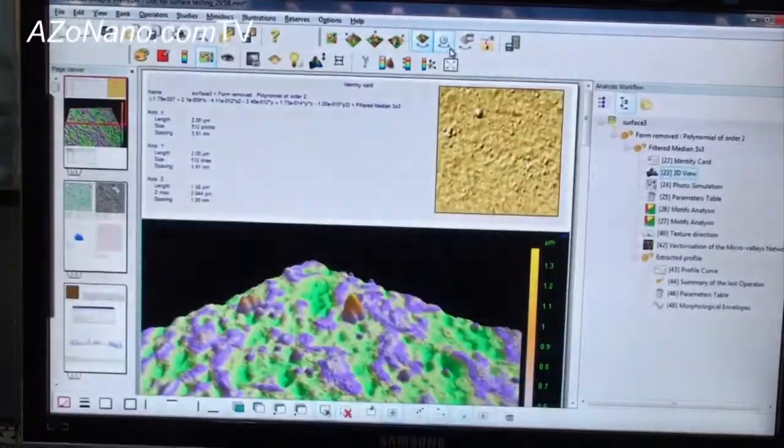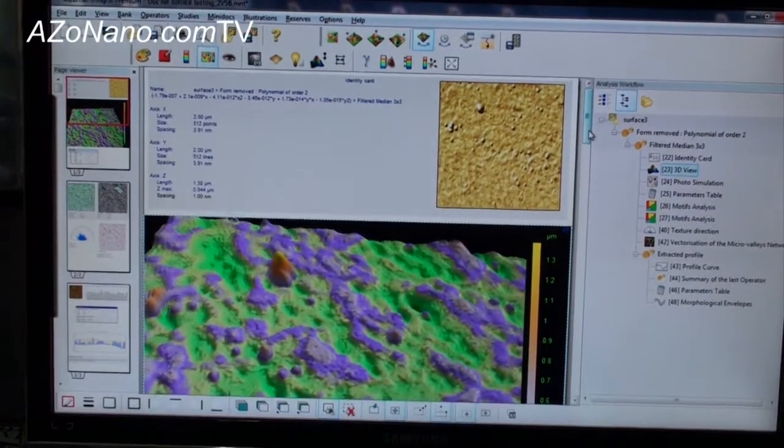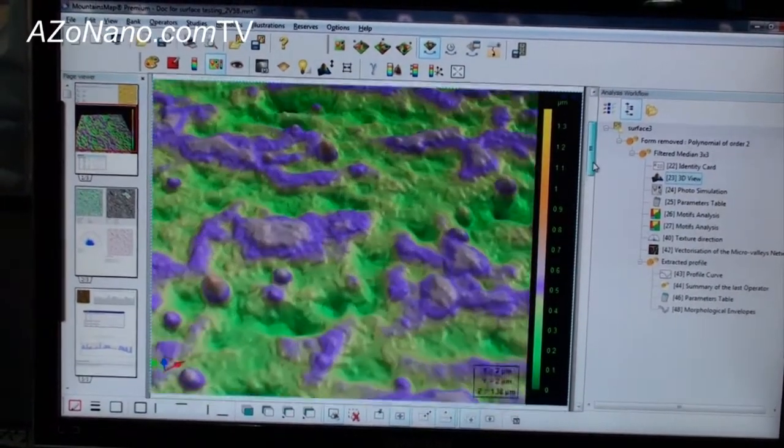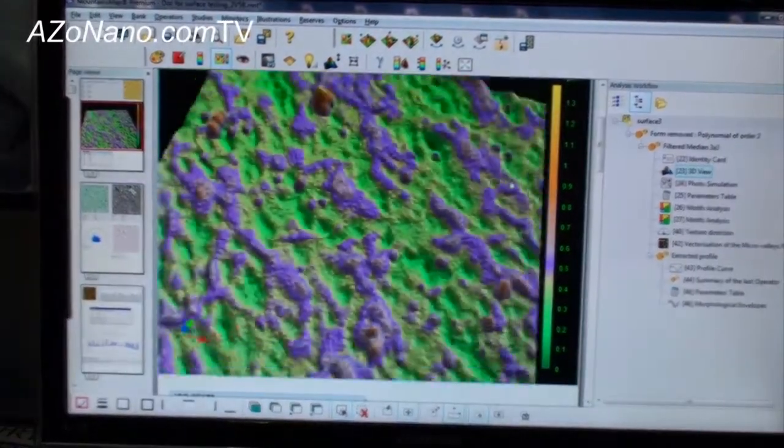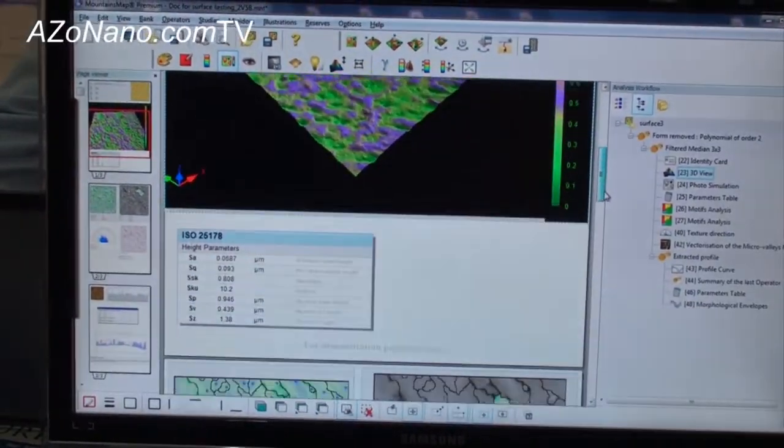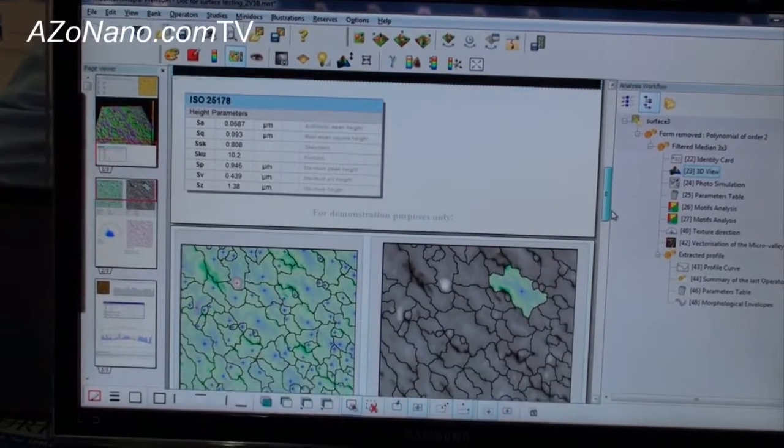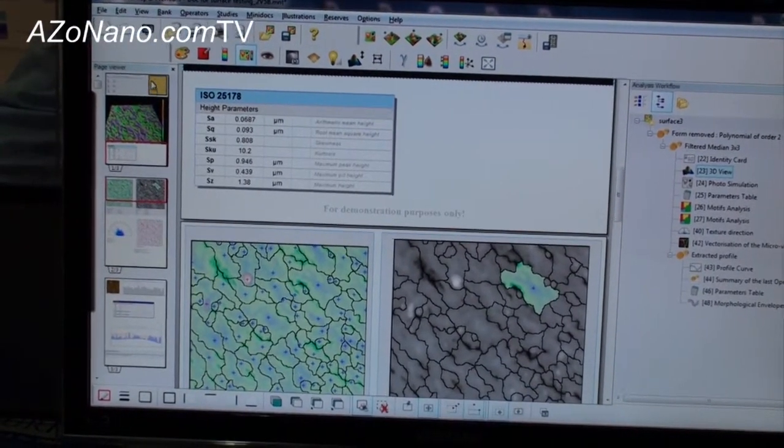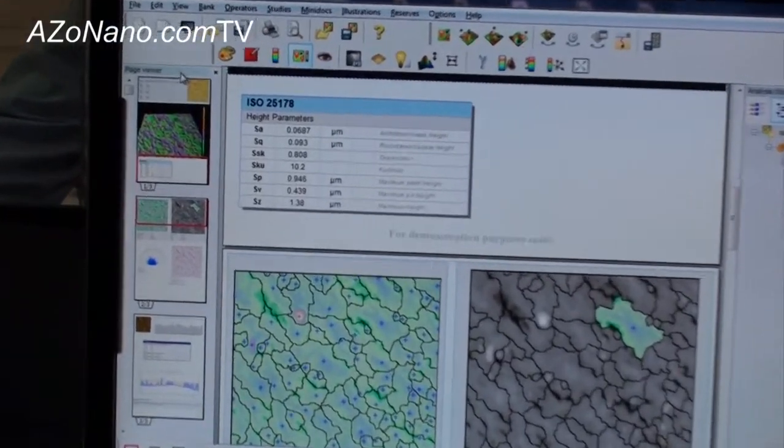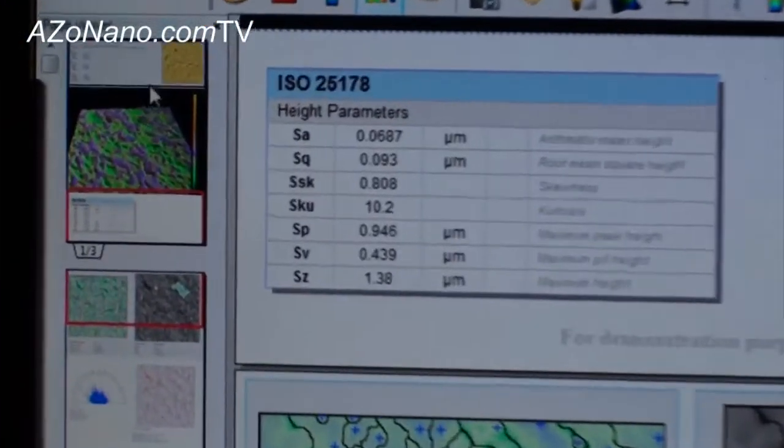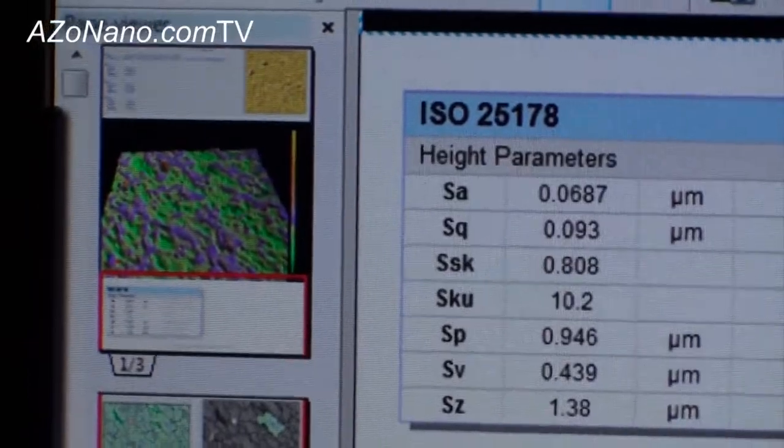First of all, I'd like to show you the document which is a series of information. On the left side of the document of the user interface, you have a page viewer containing the three pages of information.